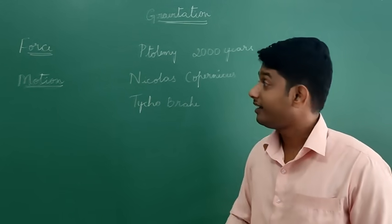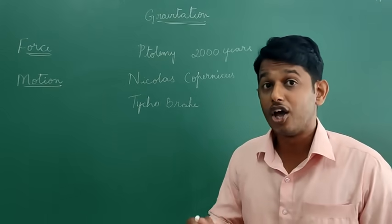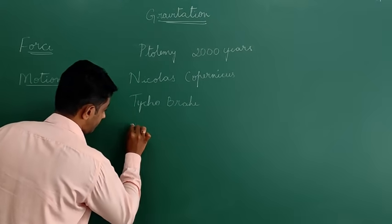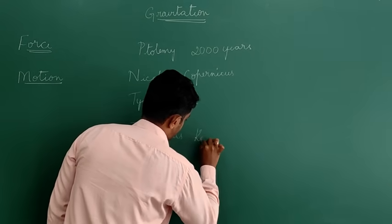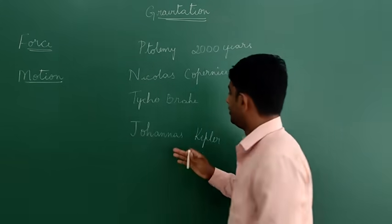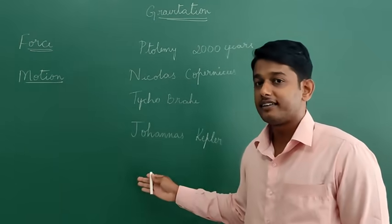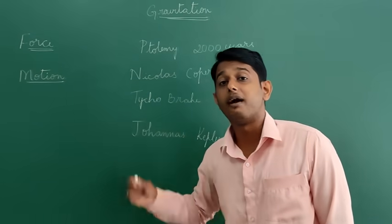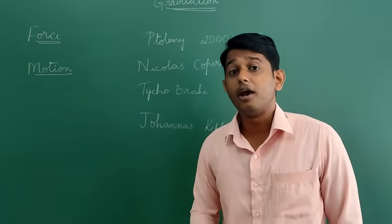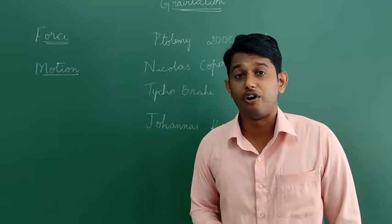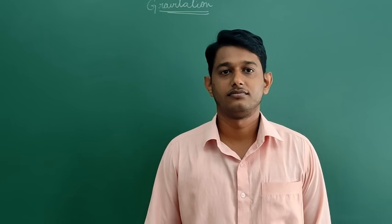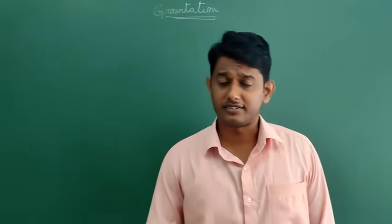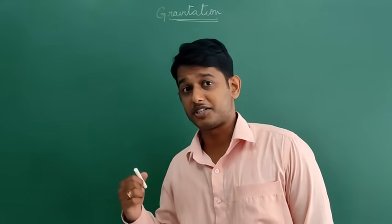After Tycho Brahe, his assistant Johannes Kepler later analyzed all the observations made by Tycho Brahe and proposed his famous three laws of planetary motion, which are still in use. After all these things, there comes the hero of this picture — Sir Isaac Newton — in the 17th century.